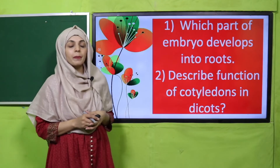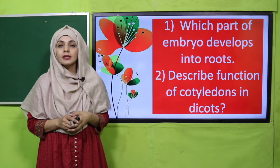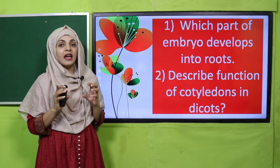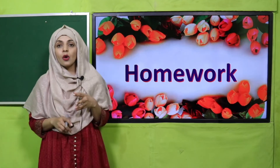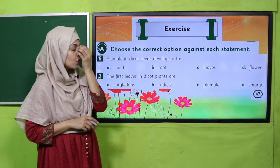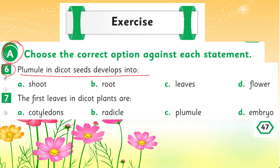Evaluation: Which part of the embryo develops into roots? — Radicle. Describe the function of cotyledons in dicots — they store food because they are thick and fleshy. For homework, go to page number 47 and do exercise A, parts 6 and 7. What does the plumule in dicot seeds develop into? — Shoot. What are the first leaves in dicot plants? — Plumule.